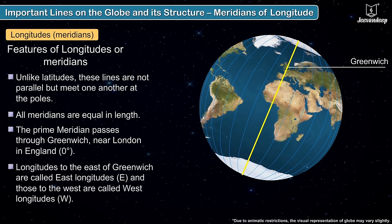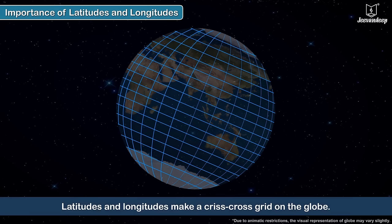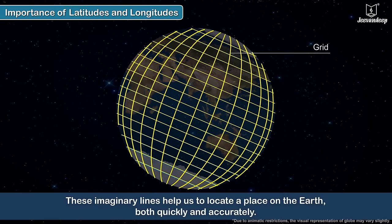Unlike latitudes, longitudes are not parallel but meet one another at the poles. All meridians are equal in length. Longitudes to the east of Greenwich are called east longitudes, and those to the west are called west longitudes. Latitudes and longitudes make a criss-cross network on the globe called a grid. These imaginary lines help us to locate a place on the earth both quickly and accurately.